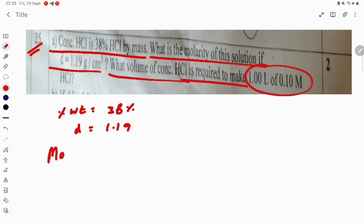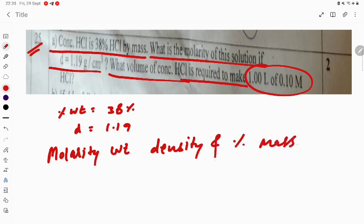For molarity, there is a shortcut formula when density and percentage mass are given. Molarity equals percentage weight multiplied by density into 10, divided by molar mass of the compound.